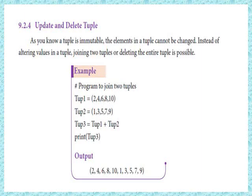So tube one equals (2, 4, 6, 8, 10). Next, tube two equals (1, 3, 5, 7, 9). Now we are going to join them. Tube three equals tube one plus tube two. Print tube three. We are going to list both tuples into a single tuple.